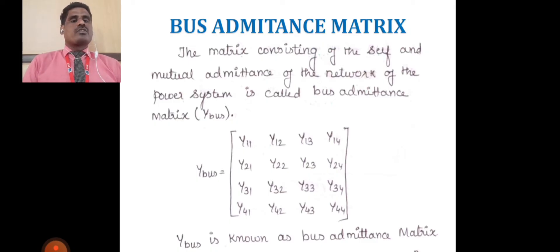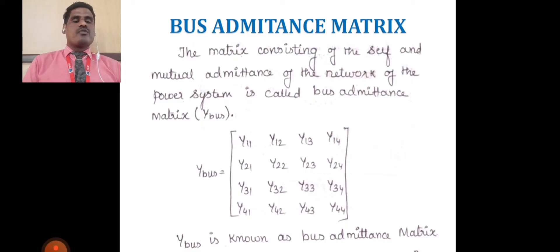This is a 4×4 matrix, that means: y11, y12, y13, y14; y21, y22, y23, y24; y31, y32, y33, y34; y41, y42, y43, and y44.